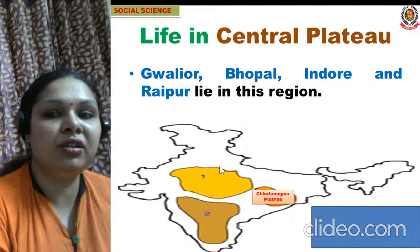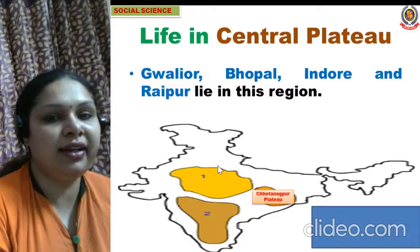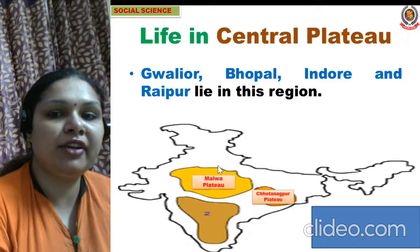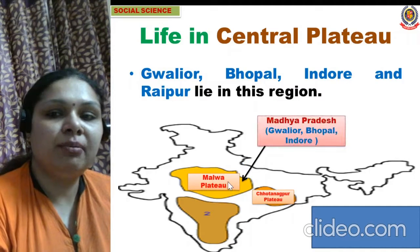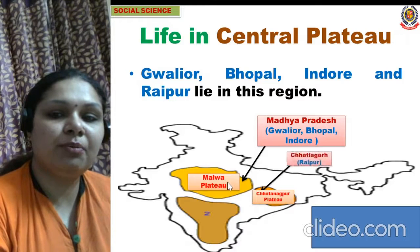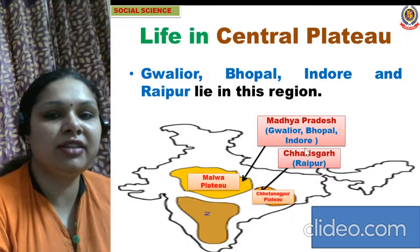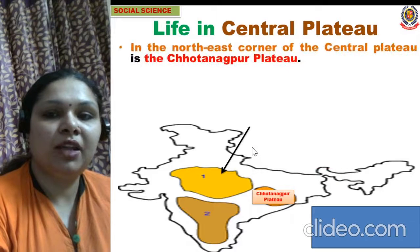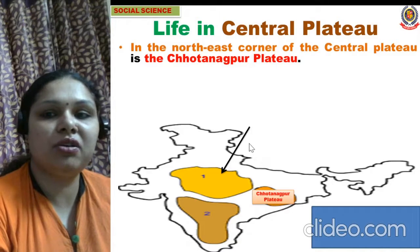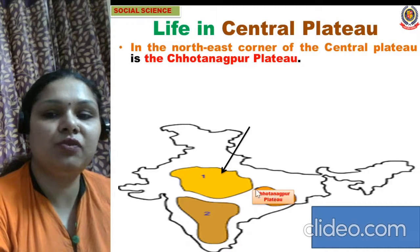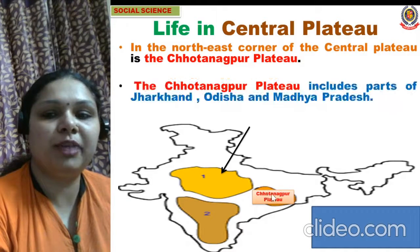The cities in the central highlands region include Gwalior, Bhopal, Indore - which lie in the Malwa plateau in Madhya Pradesh - and Raipur in Chhattisgarh, which is in the Chhota Nagpur region. In the northeast corner of the central plateau is the Chhota Nagpur plateau. This Chhota Nagpur plateau includes parts of Jharkhand, Odisha, and Madhya Pradesh.